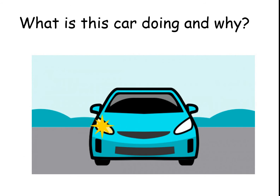Next, we've got a picture of a car with a flashing yellowy-orange light on one side. So what is this car doing and why? Pause the video if you need a minute to think about it. Hopefully you said that this car is indicating — it is flashing a coloured light to give information to other road users about what it is going to do next. So indicating means giving information.